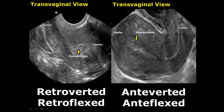The cervix is not very clear in this image, that's why we can use a combination of transabdominal and transvaginal views to determine the actual location of the uterus.